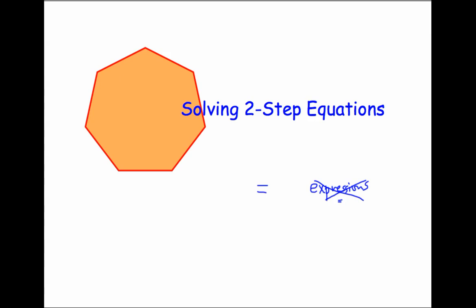So if an equation is a statement of fact, we use an equal sign to say that this number, whatever this number is, is the same number as this number. So let's say, for example, this number is 7. Well, this number has to be 7. Let me give you another example.